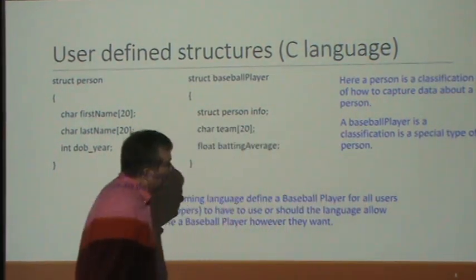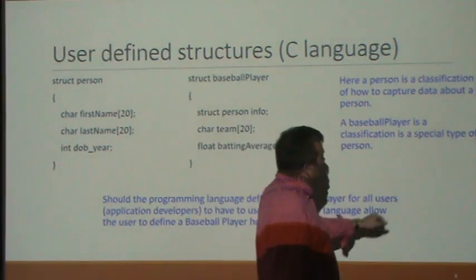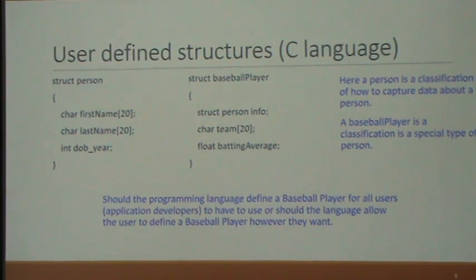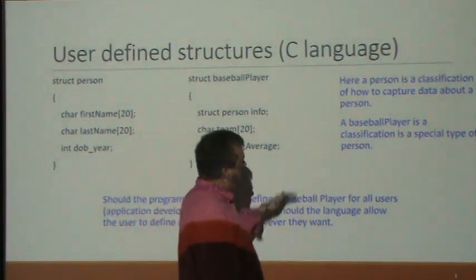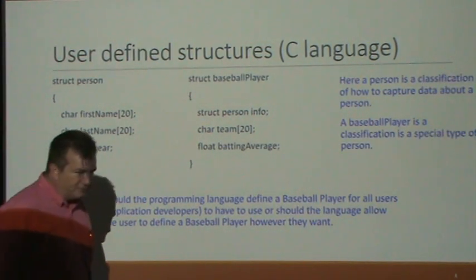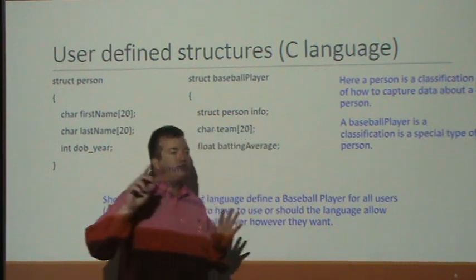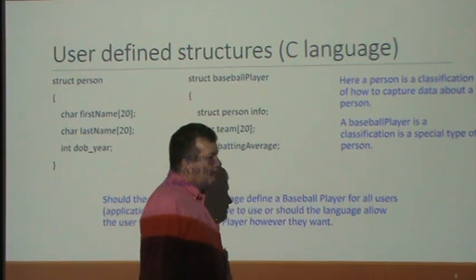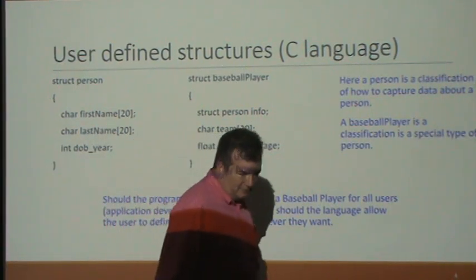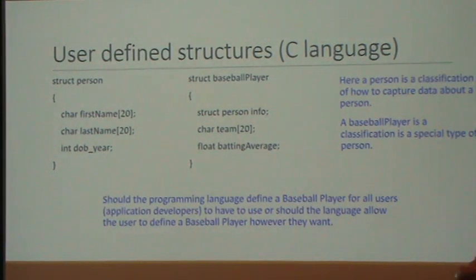A person is a classification — a big word, because we're going to classes very shortly. It's a classification on how to capture data about a person. A baseball player is a classification of a special type of person. A baseball player is a person who happens to also play baseball. You cannot be a baseball player unless you're a person — there are no dog baseball players.